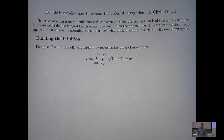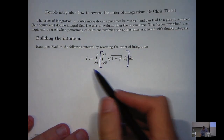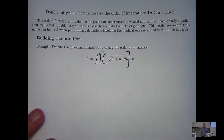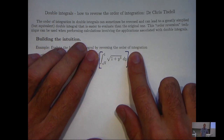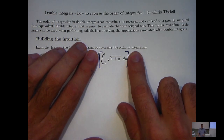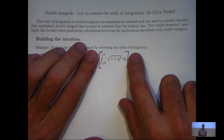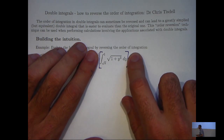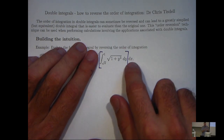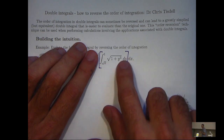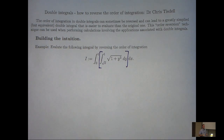Now the first question is: why would you want to do that? If you look at this double integral and try the usual technique of starting with the inside integral first and evaluating that, we're immediately stuck because we're trying to integrate root 1 plus y cubed with respect to y, and that's very difficult if not impossible in terms of elementary functions. However, if dx and dy were switched around, it's very easy to integrate root 1 plus y cubed with respect to x.